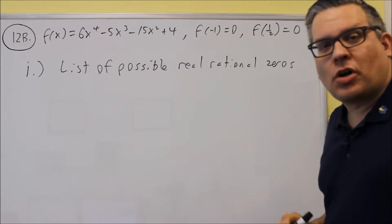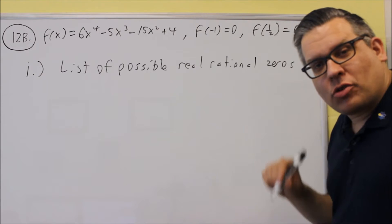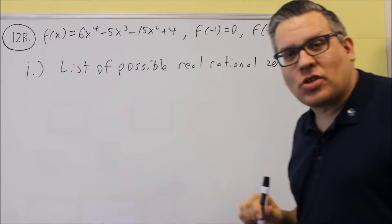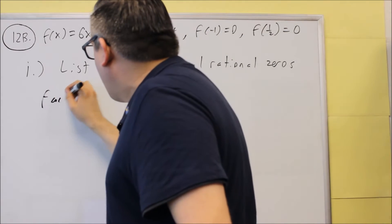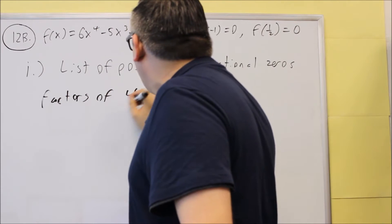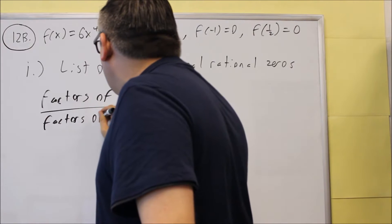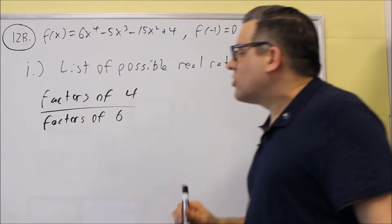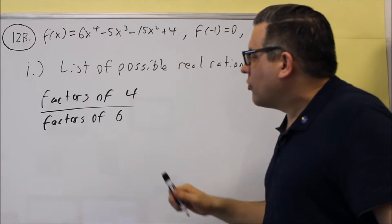We're still going to do part one the same — list of possible real rational zeros. The formula is still going to be the same: it's factors of the last number divided by factors of the first number. So we're going to do factors of four over factors of six.